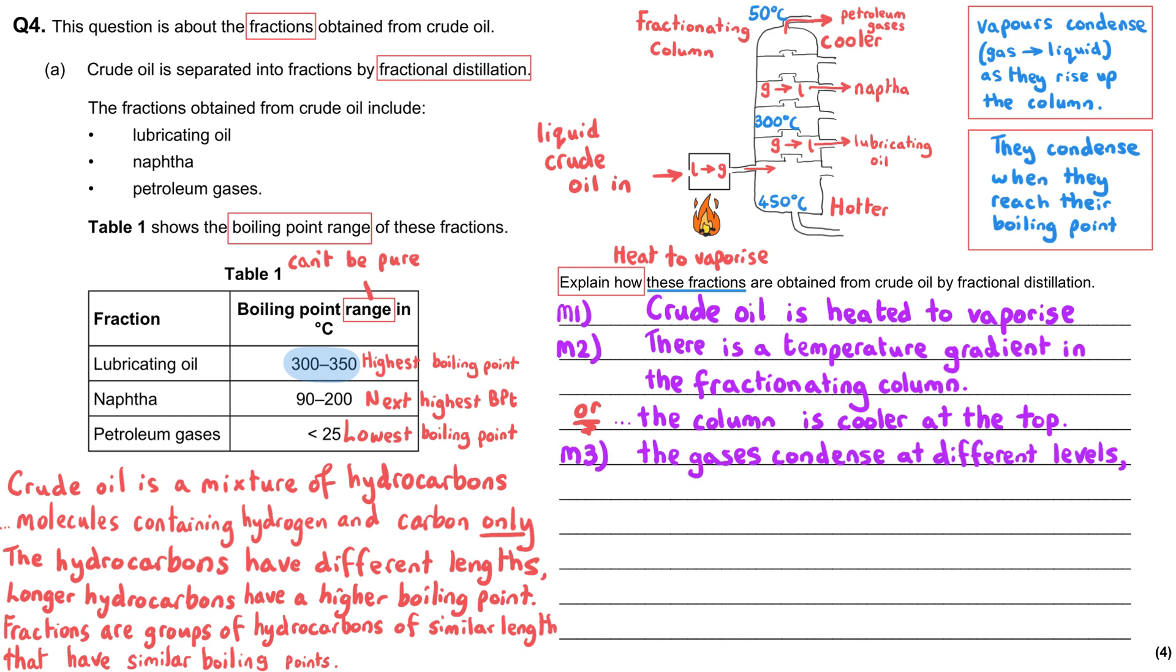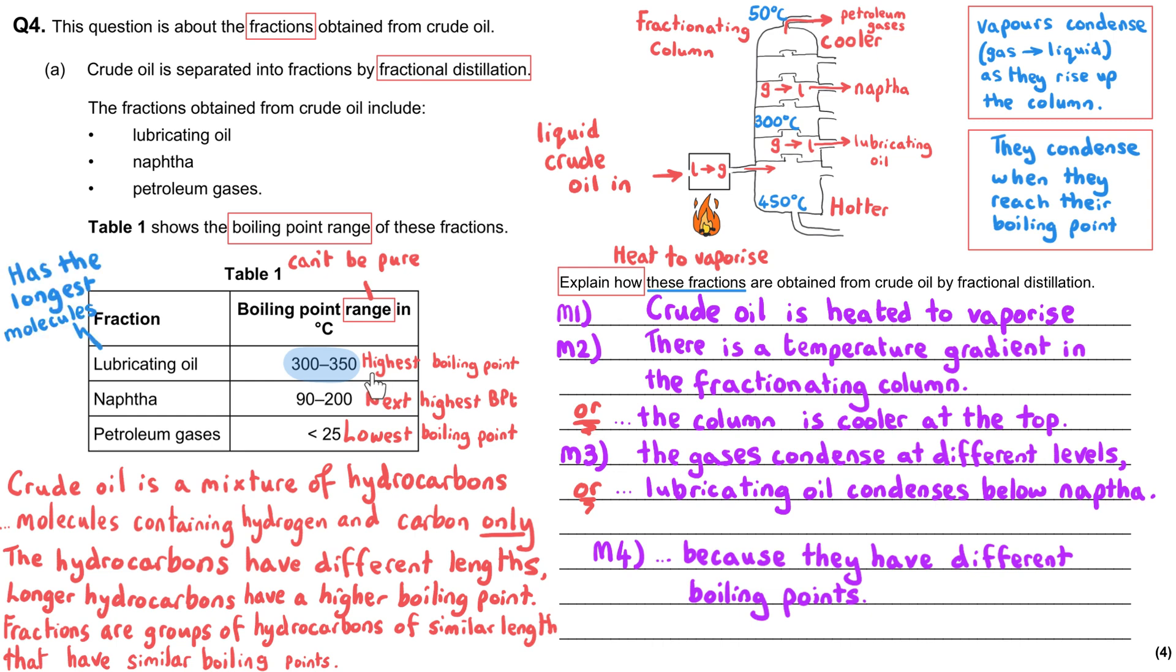And then these vapors will condense at different levels. And we can be specific and say that the lubricating oil will condense lower down than naphtha. And they condense at these different levels because they have got different boiling points. The longer hydrocarbons have got higher boiling points. And that would be lubricating oil out of this trio of different fractions. And petroleum gases have the lowest boiling point of the three.